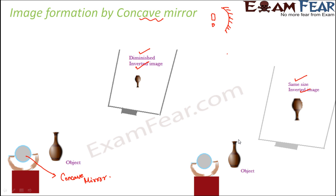Do you know what this position of the object is? I already gave a brief introduction of different terms related to a spherical mirror — I spoke about the center of curvature, which is the center of the sphere from which that mirror is derived. When the object is located at the center of curvature of this mirror, the image which is formed is of the same size but it is inverted.